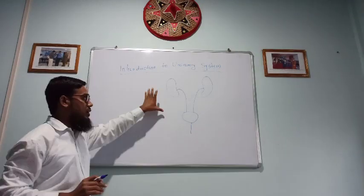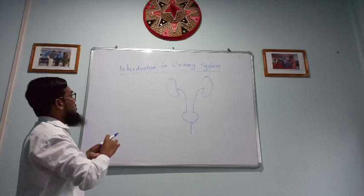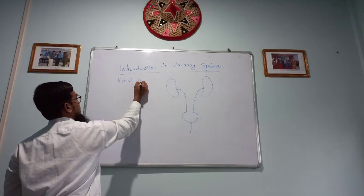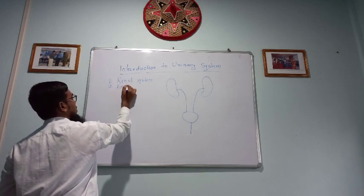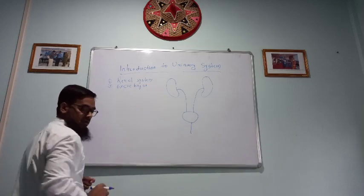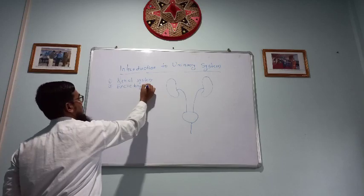So this is the diagram of urinary system. Urinary system is also called renal system or it is also called excretory system.